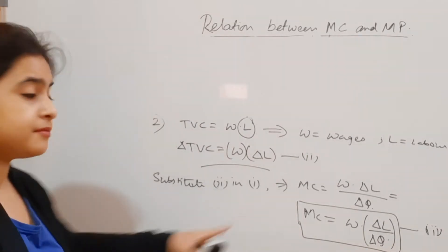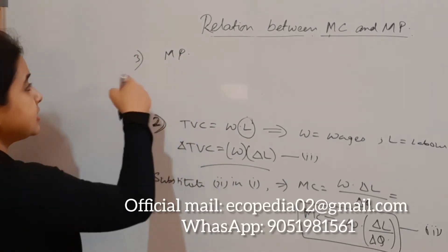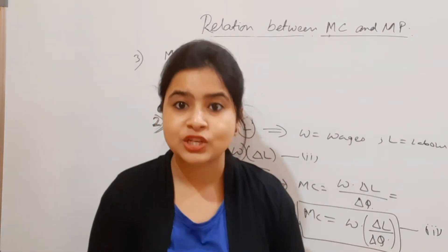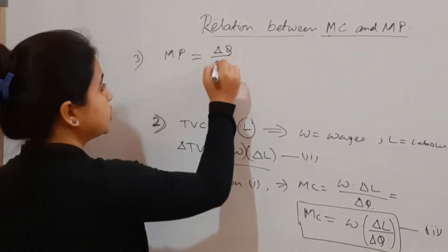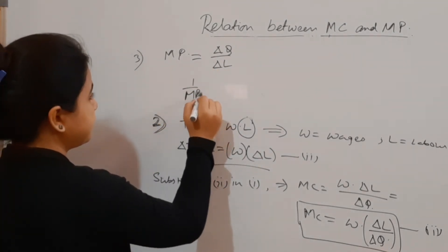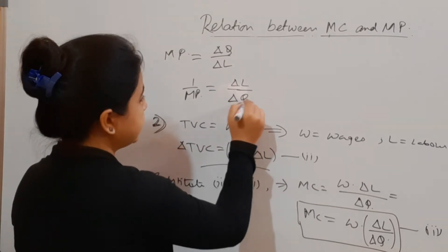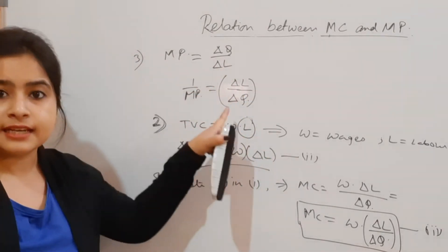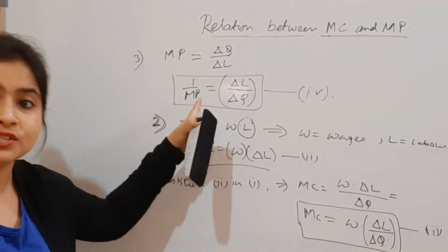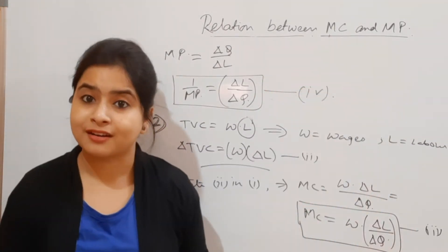The third thing to remember: what is marginal product? Marginal product is the change in total output due to one unit change in the input, so MP = ΔQ / ΔL. If we reciprocate this, we get 1/MP = ΔL / ΔQ. Let's mark this as equation number 4.